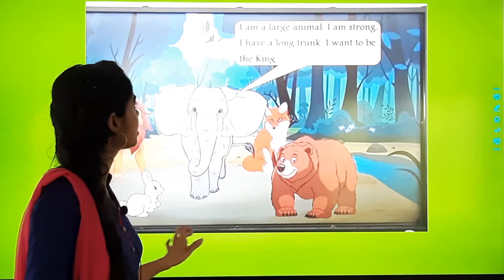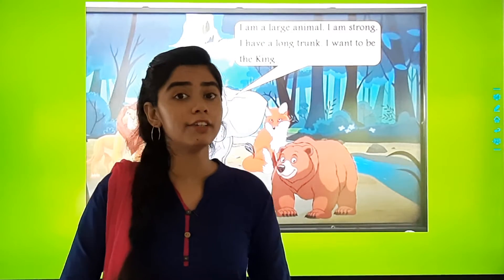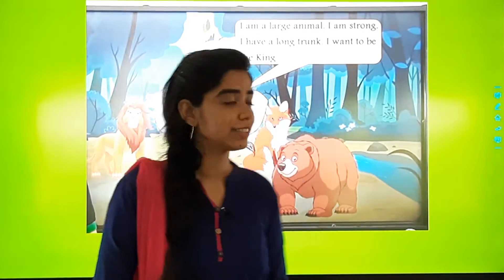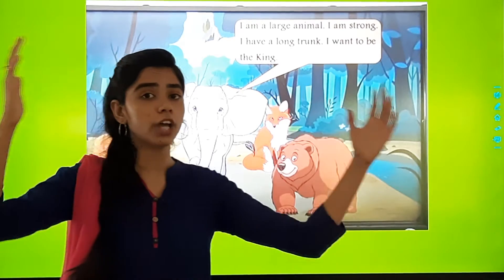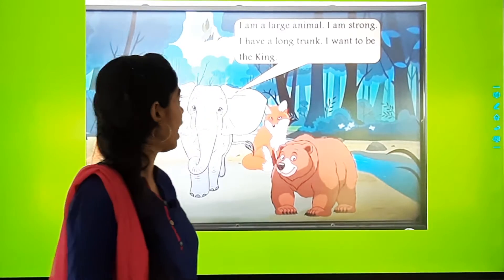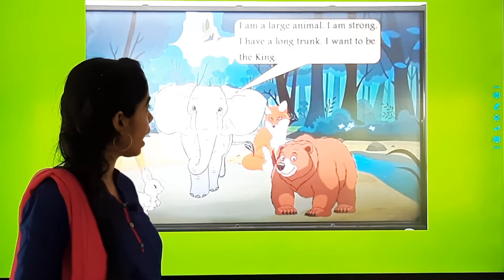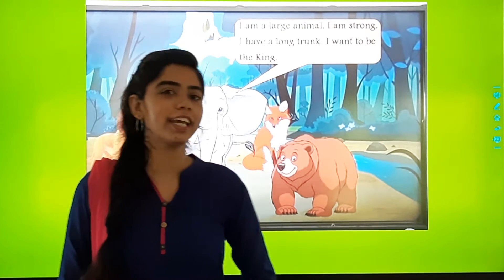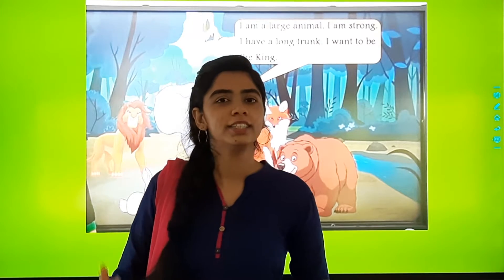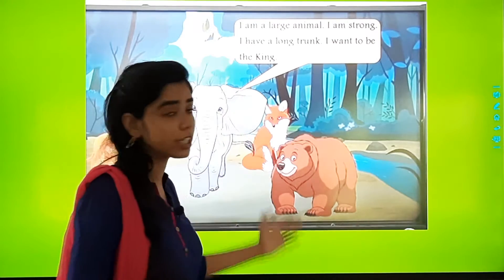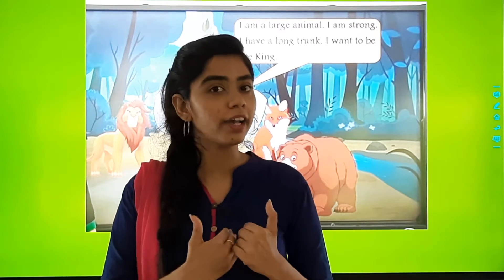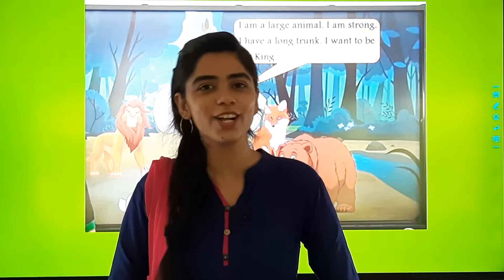First came the elephant. Now what did the elephant say? I am a large animal. I am strong. I have a long trunk. I want to be the king. So the elephant told all these qualities about itself, that this is the reason why I deserve to be the king of the jungle.